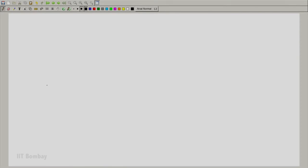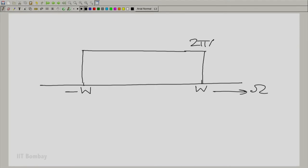Let us draw that. On the ω axis, I have from -W to +W and the height is essentially 2πaW. That is the Fourier transform of X(t).